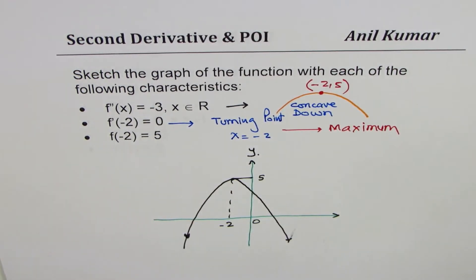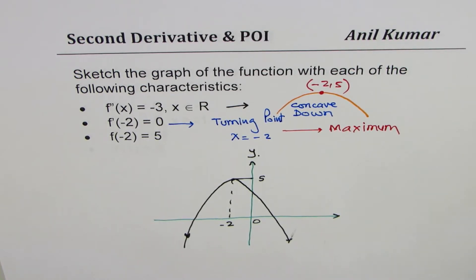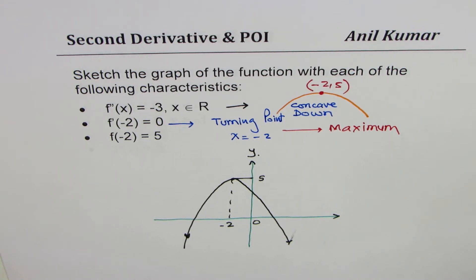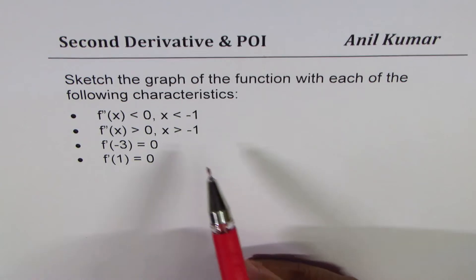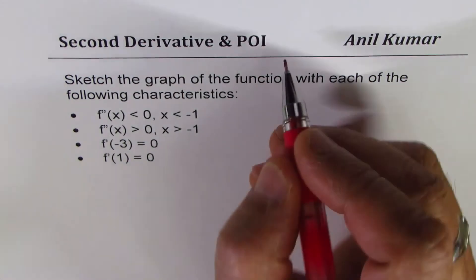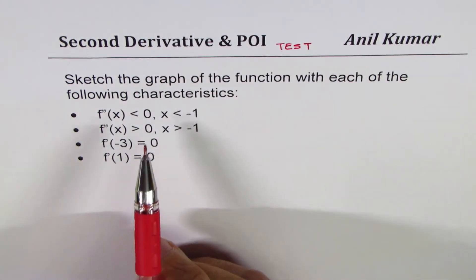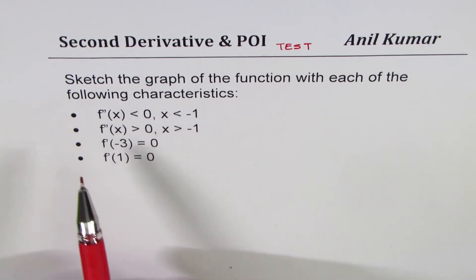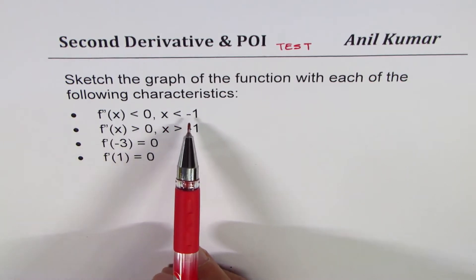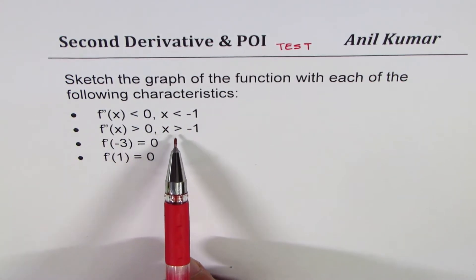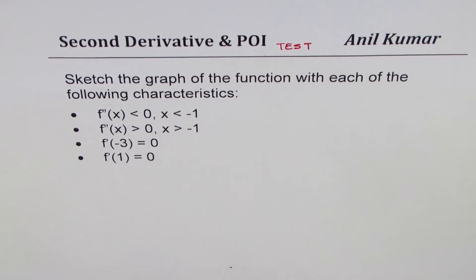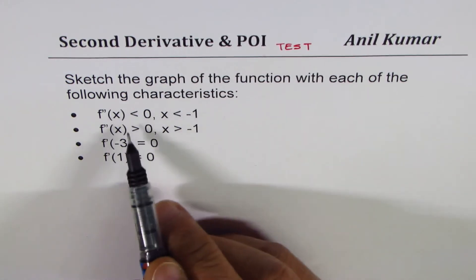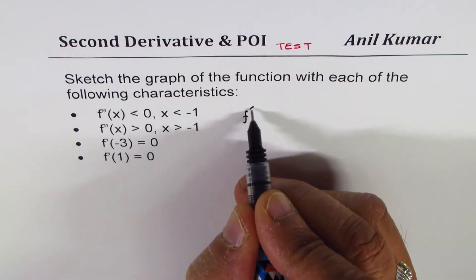Here is the third and last example on sketching graphs using the second derivative — take it as a test question. Sketch the graph of the function with each of the following characteristics: the second derivative is less than 0 when x is less than -1; the second derivative is greater than 0 when x is greater than -1; the first derivative at x = -3 is 0; and the first derivative at x = 1 is 0. You can pause the video, answer the question, and then look at my suggestions.